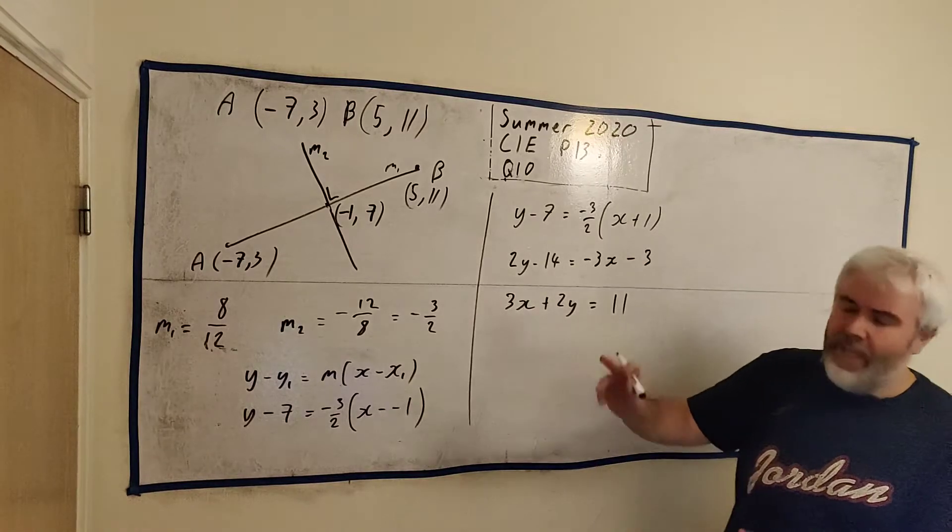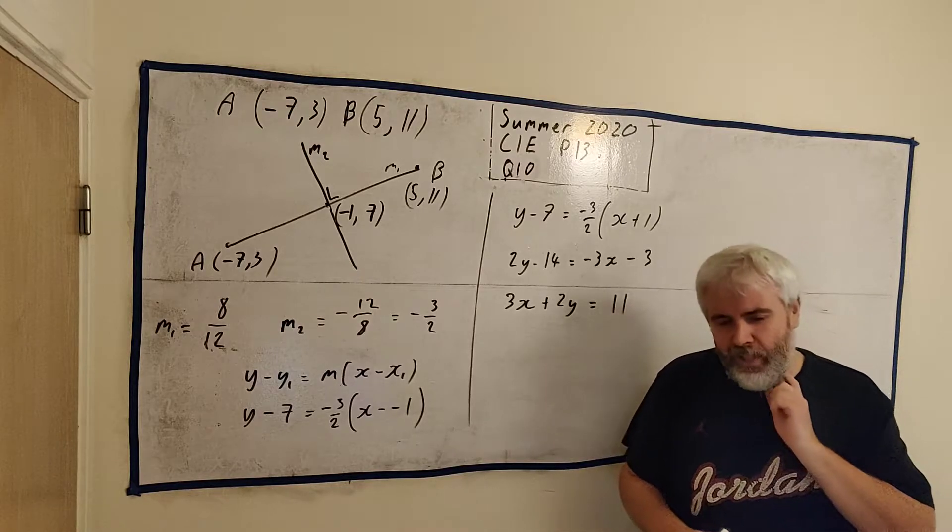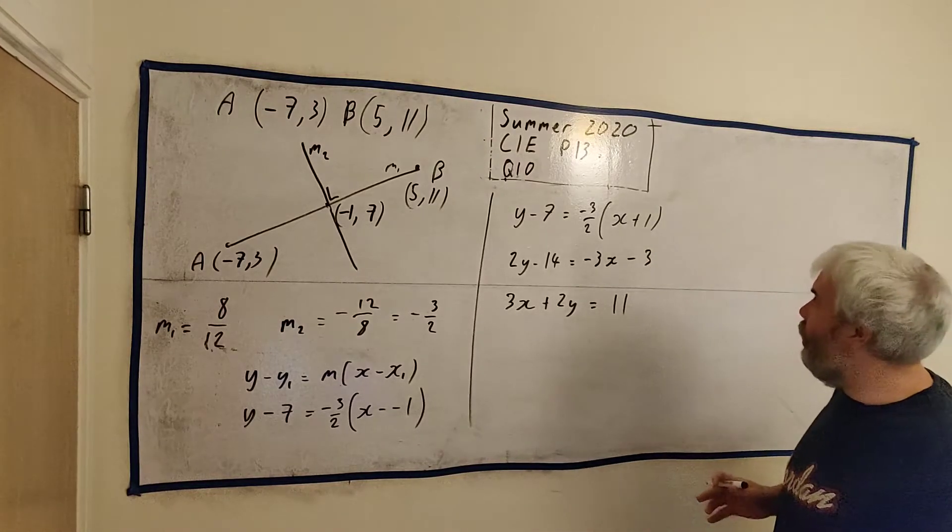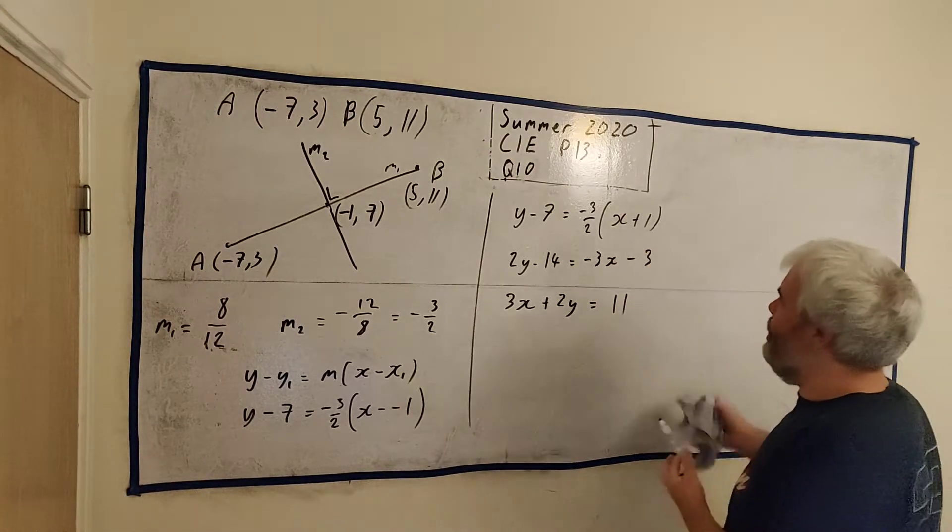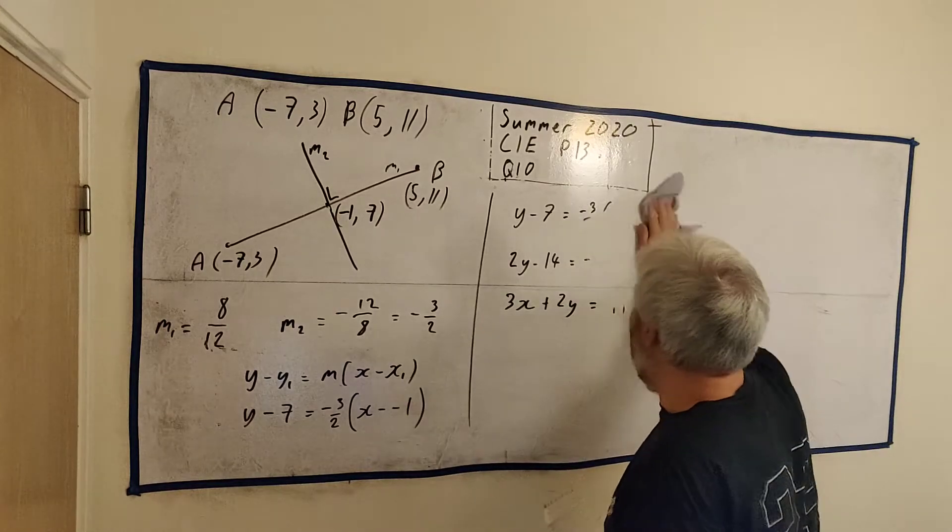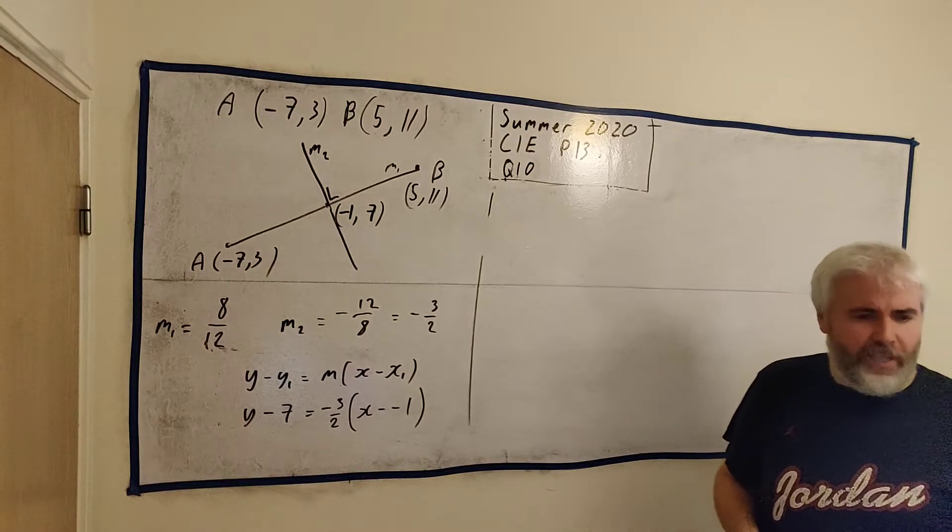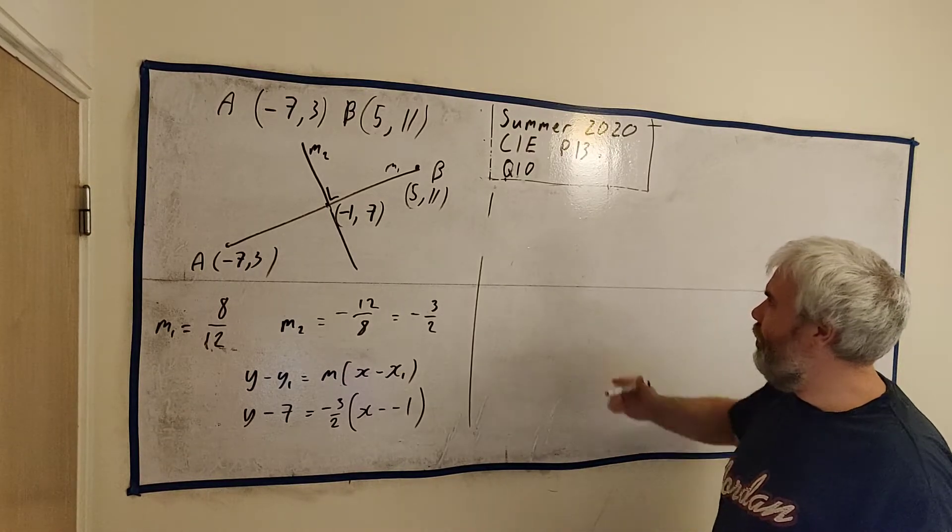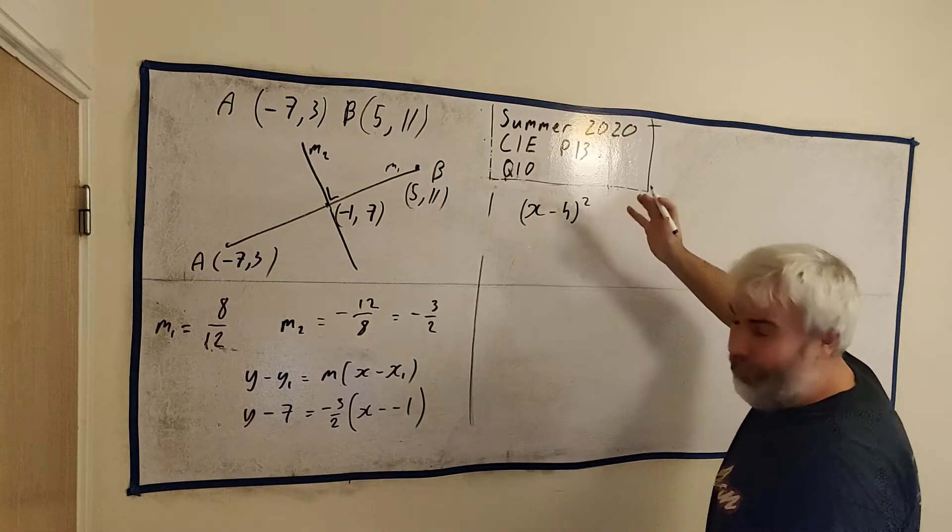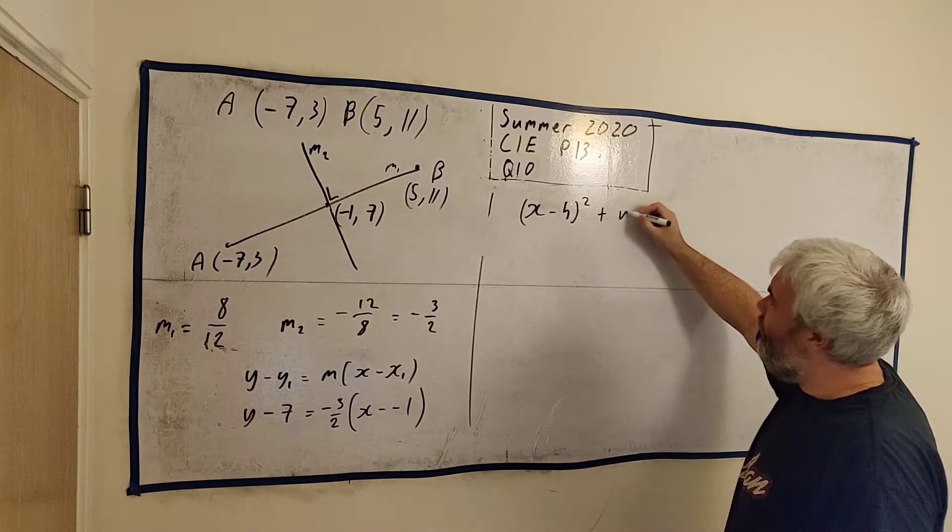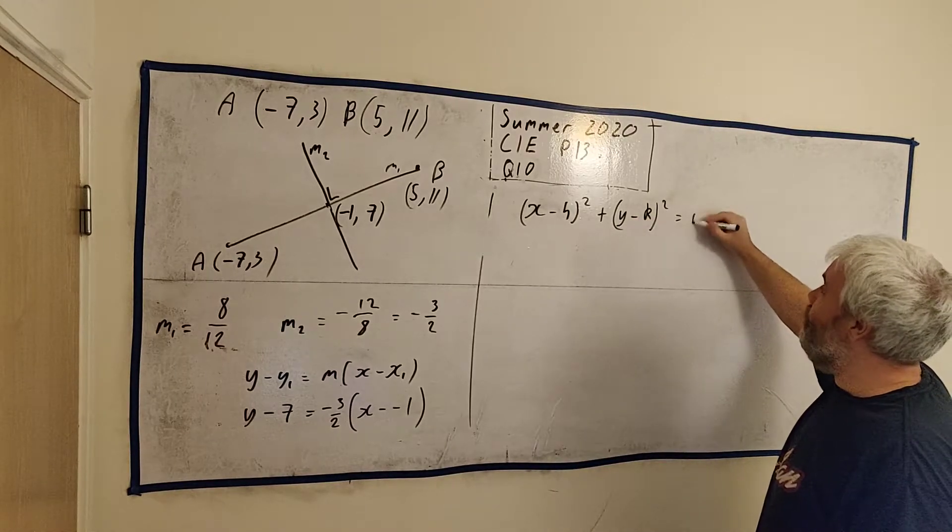Okay, part B. The circle passes through AB, and its center lies on this line. This is a tricky question, especially if you don't know how to start it. So you can pause the video and go back if you don't have this already. This can be a tricky question. We have an equation for a circle. It's x minus h squared plus y minus k squared equals r squared.